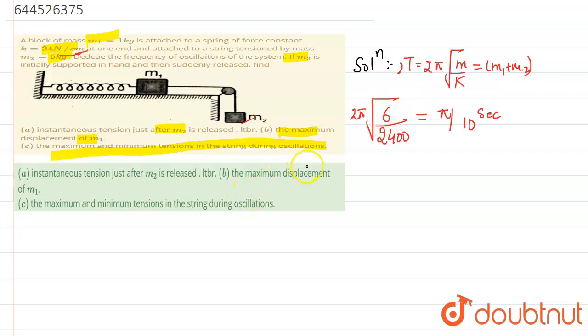Now we got the time period. Frequency is 1 by time period, so frequency will be 10 by π hertz. We can also calculate omega, which is 2πf. It will become 20 radians per second.